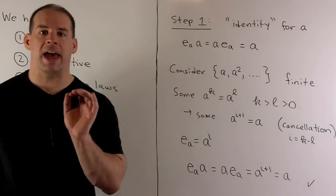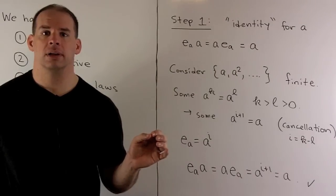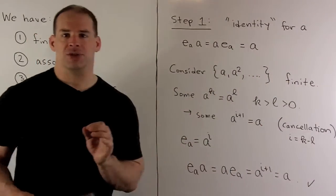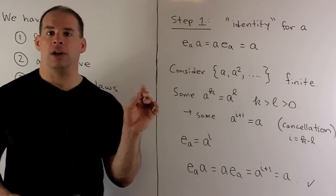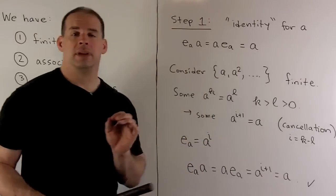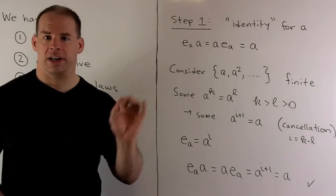Now, to get E sub A, what we'll do is we'll take A and then just start raising the powers. Since this subset of G is finite, that means there's going to be exponents K and L not equal to each other such that A to the K equals A to the L. And then I can use the cancellation law to bring the exponents down one at a time.